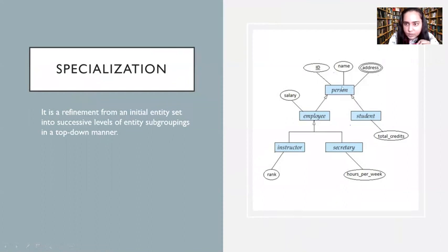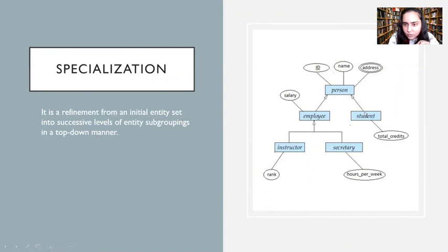A person in a university would have all these attributes: ID, name, address, salary, total credits, rank, and hours per week. After doing this, you would realize that you wasted some space because every person does not have a salary — that person could be a student. So you decided to split into two different entities: employee and student. There are some common attributes between employee and student: ID, name, and address. But attributes like salary, rank, and hours per week you want to associate only with an employee, not with a student. And with student, you only want to have total credits.